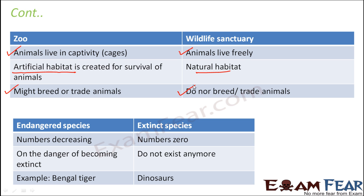Differentiating endangered species and extinct species: Endangered species are those whose numbers are decreasing but they still exist. Extinct species, however, have decreased to zero in number — they do not exist anymore. Examples of extinct species are dinosaurs, while the Bengal tiger is an example of an endangered species — it still exists but in very low numbers and might become extinct any day.